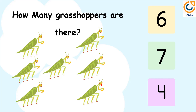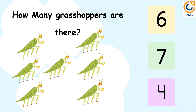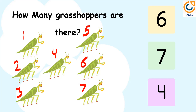How many grasshoppers are there? Let's count the number of grasshoppers. 1, 2, 3, 4, 5, 6, 7. There are 7 grasshoppers.